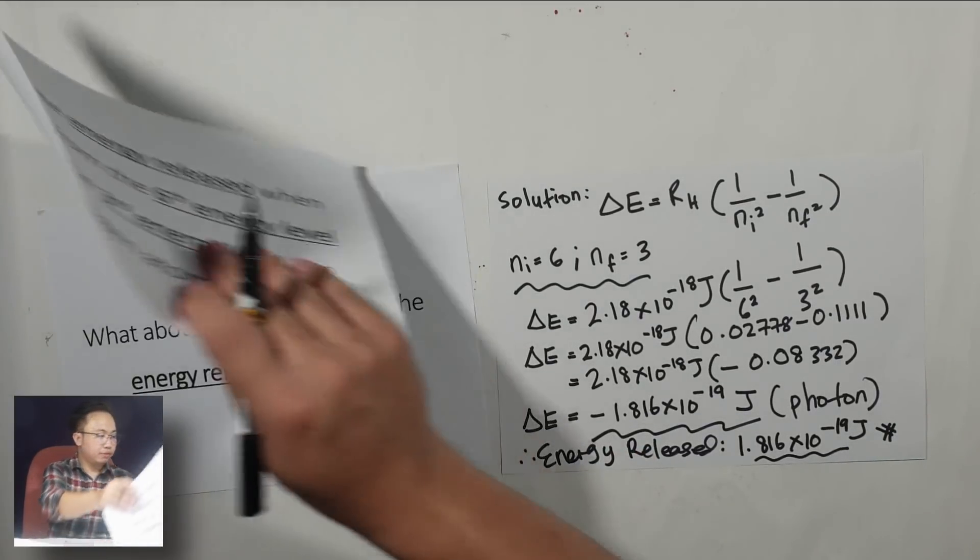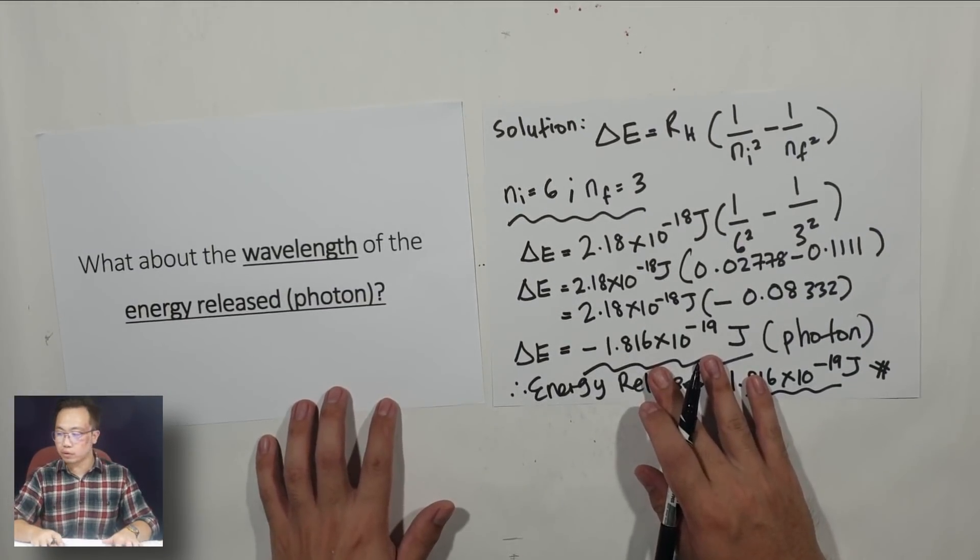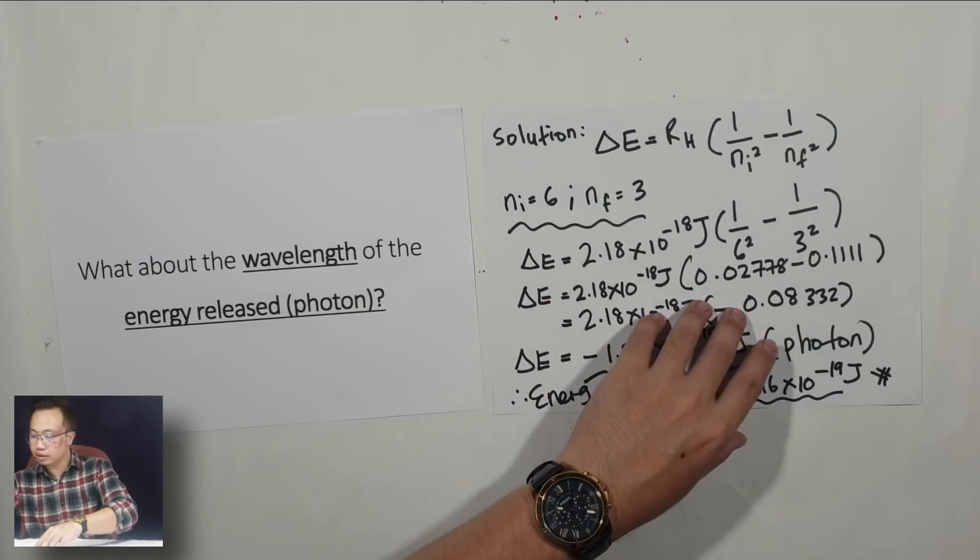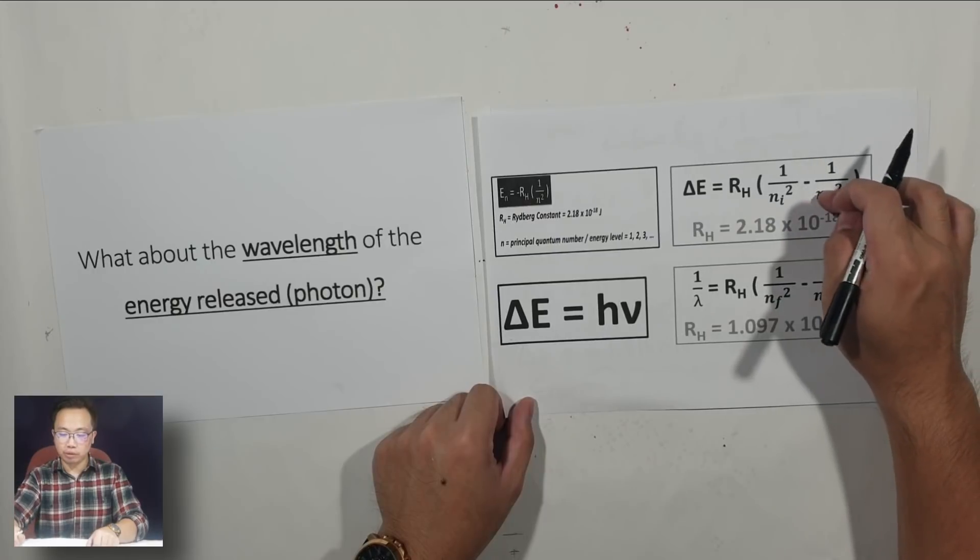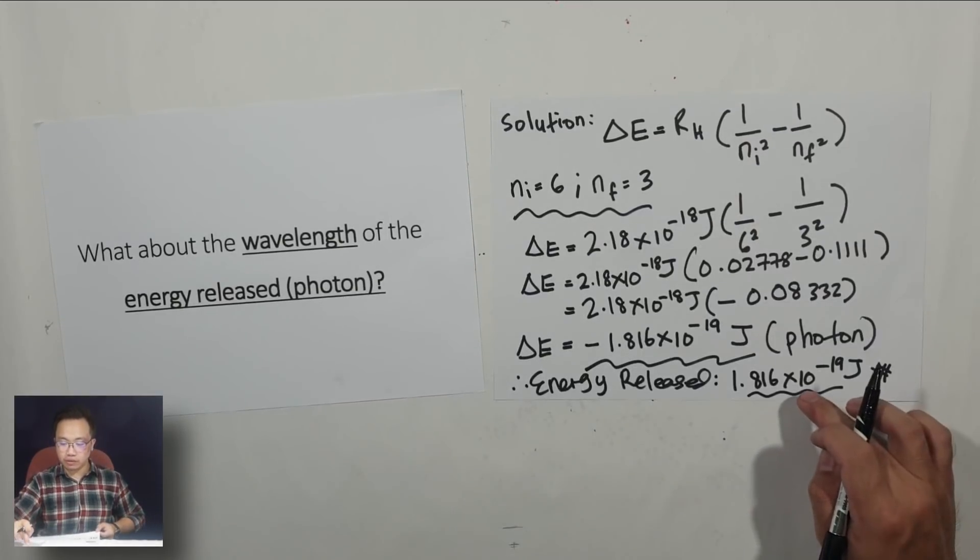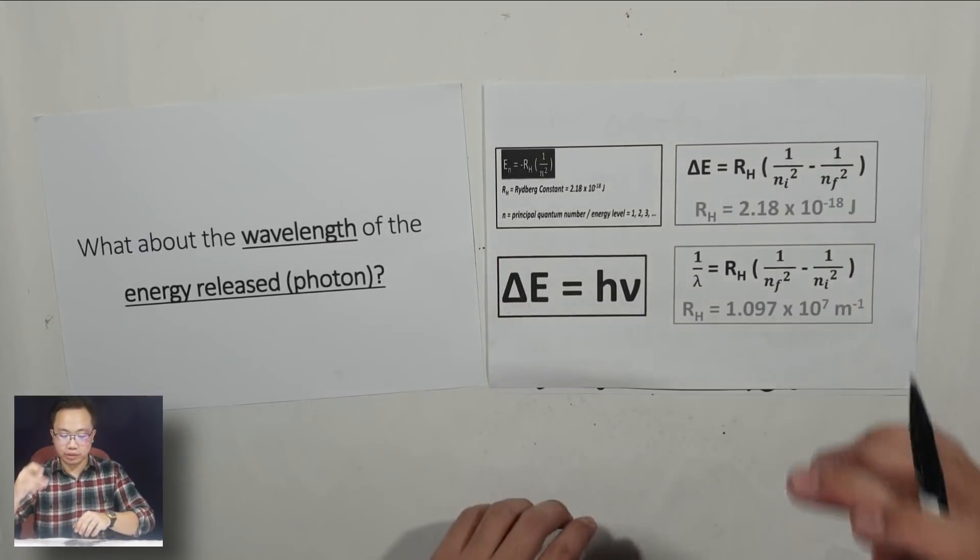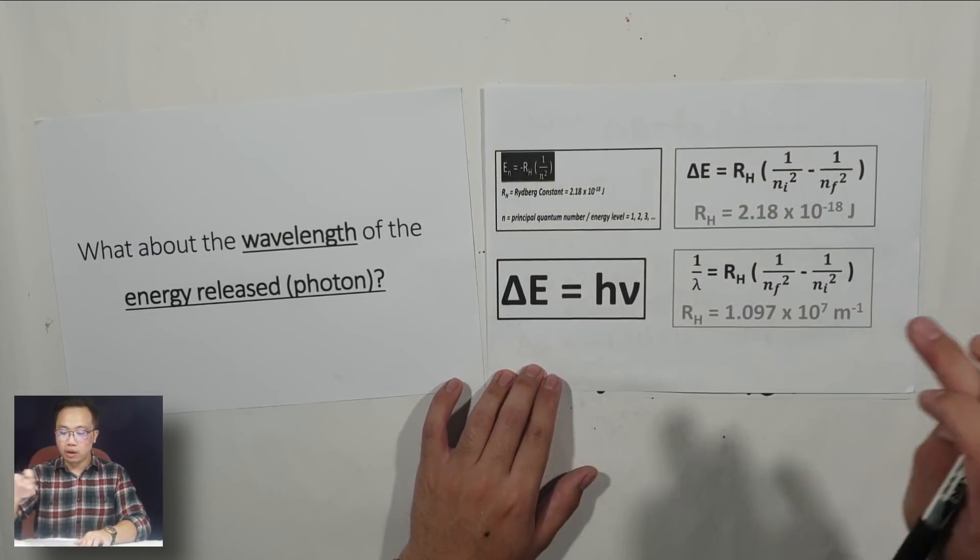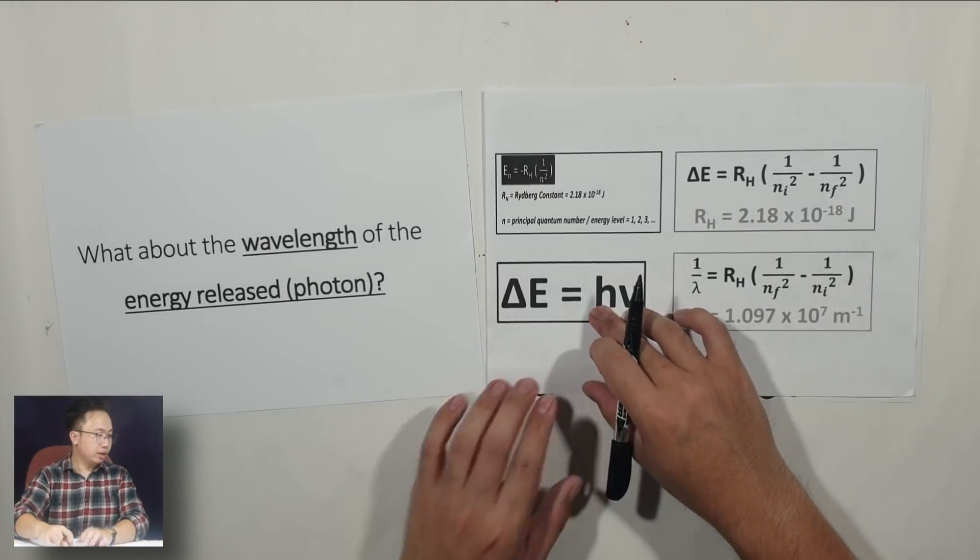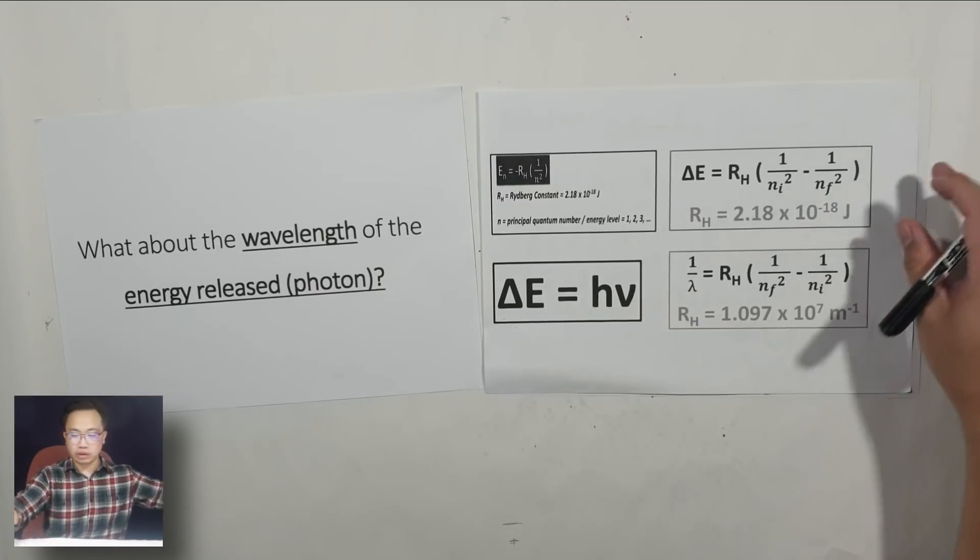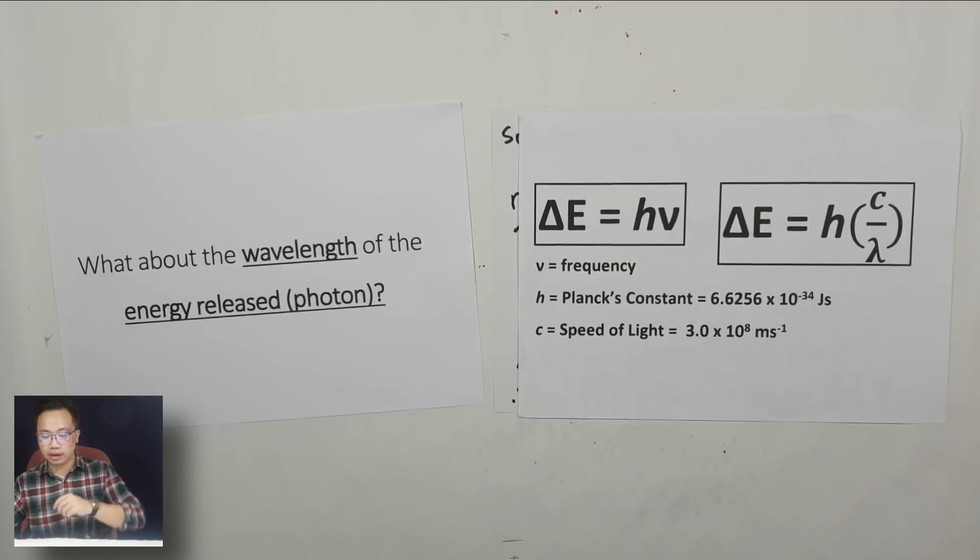But what about the wavelength? What is the wavelength of that photon being released? Remember just now, I've told you about this. I've used this formula to get the energy of the photon. I have two choices. Whether I'm going to use this formula to get the wavelength or I can use this formula to get the wavelength. Let's try this one when you substitute the value of delta E into here.